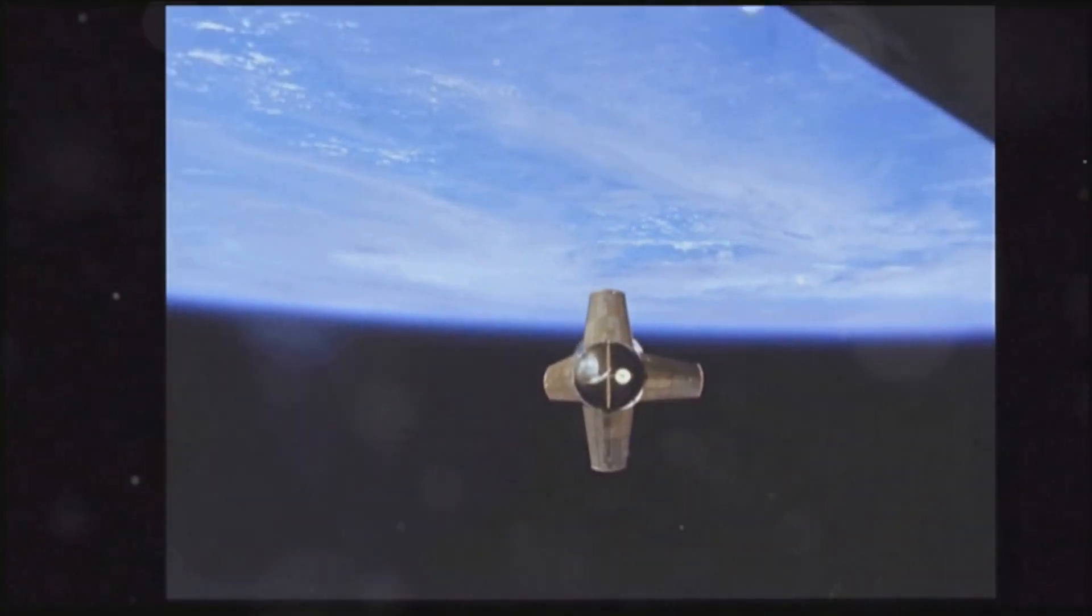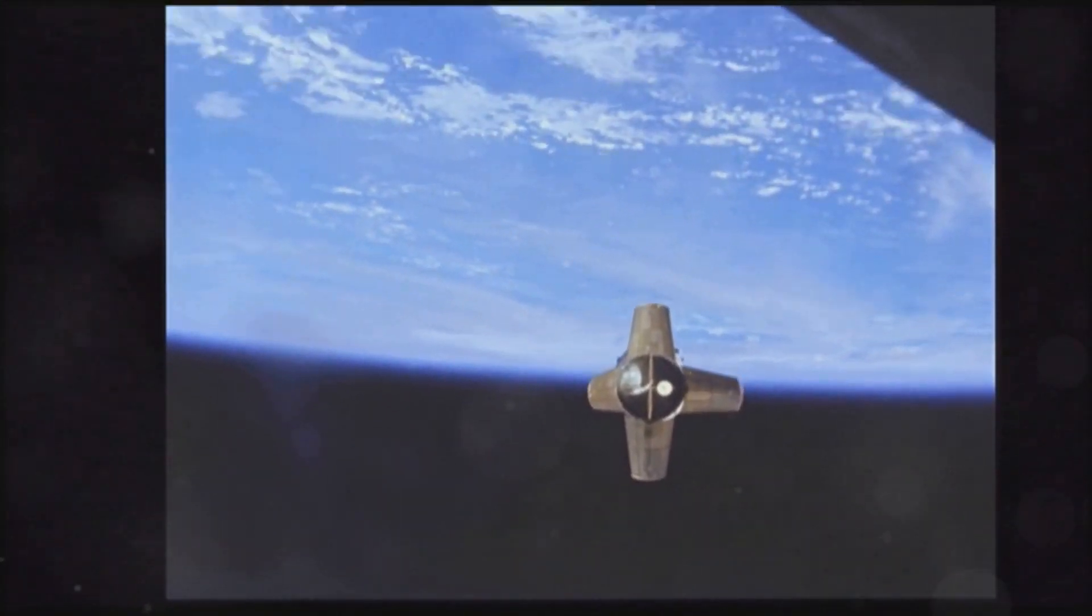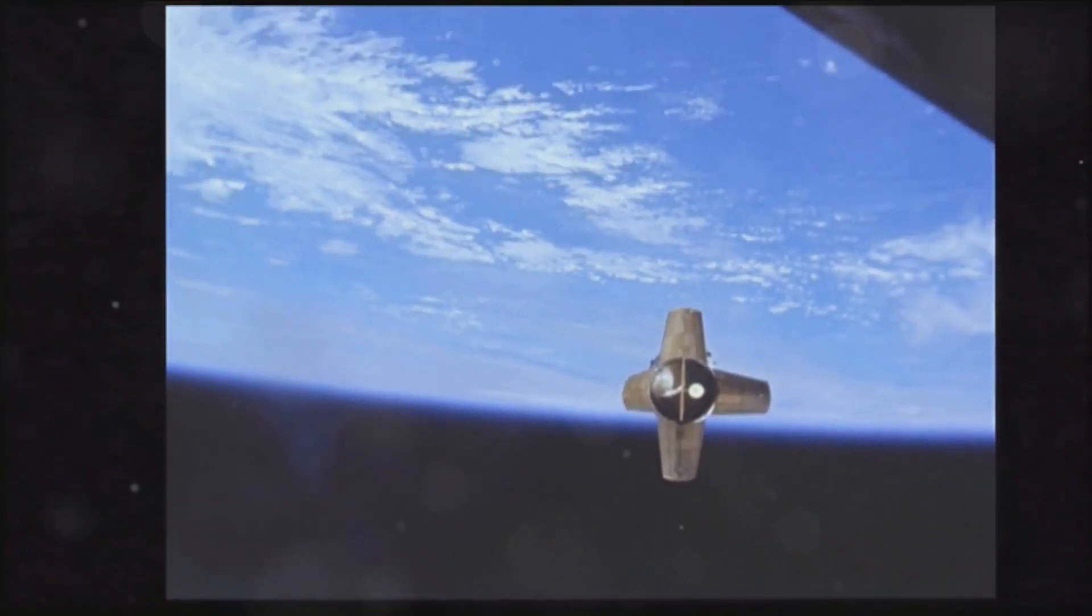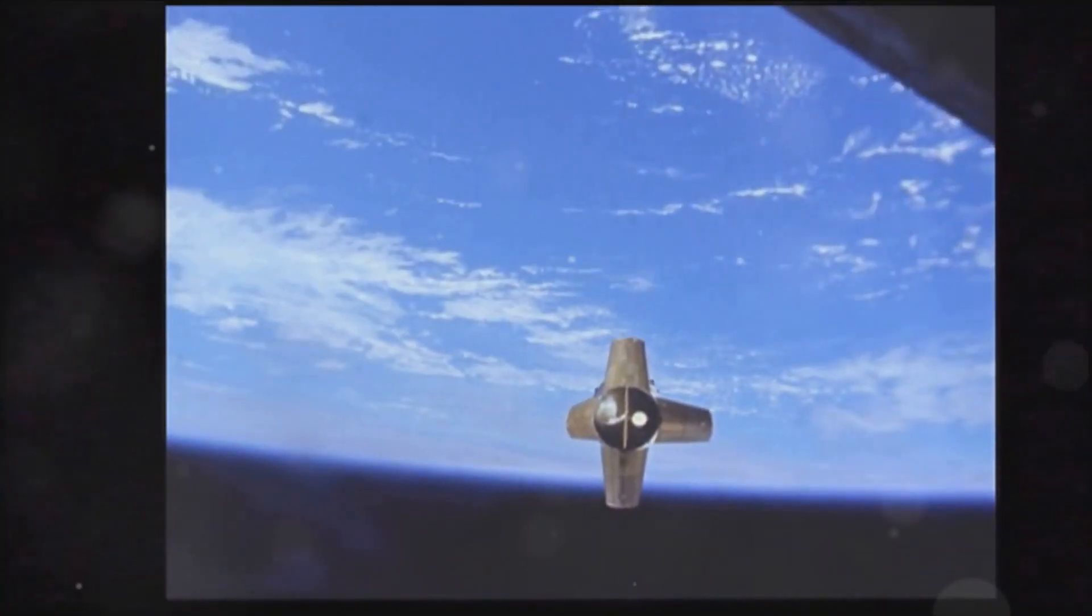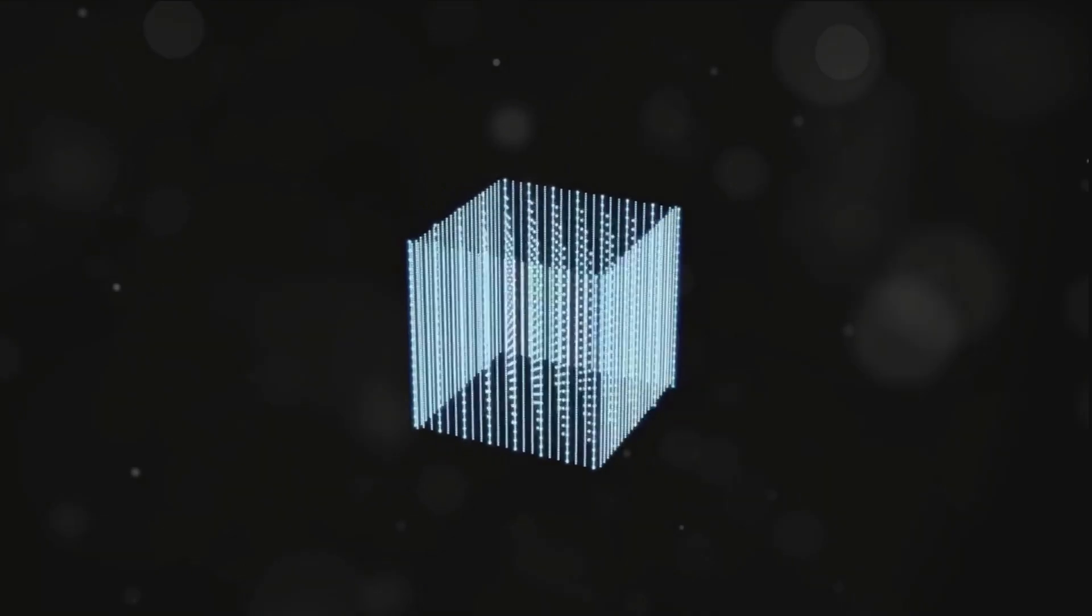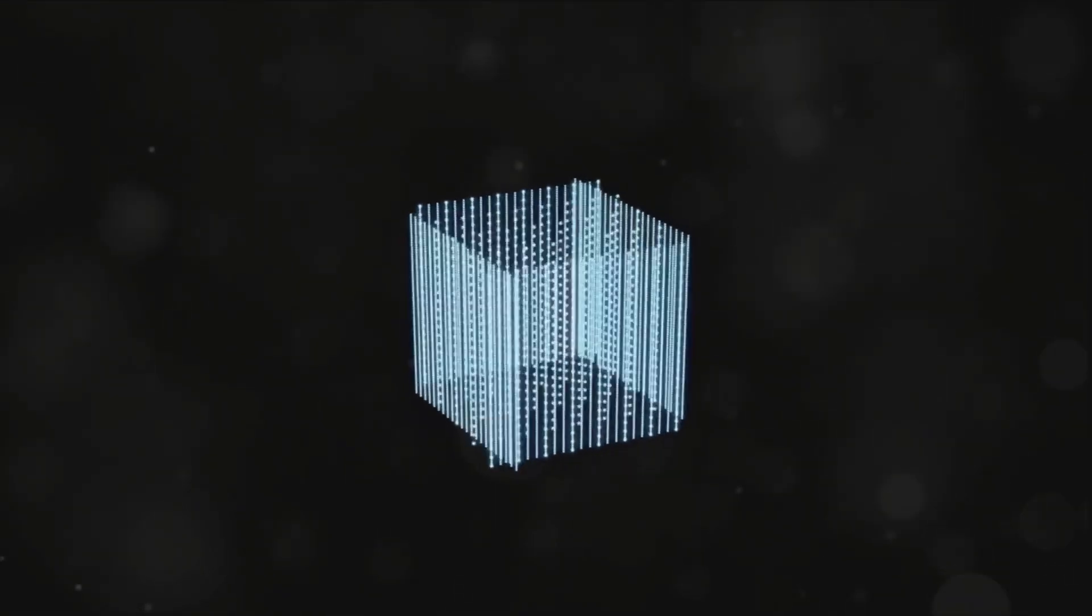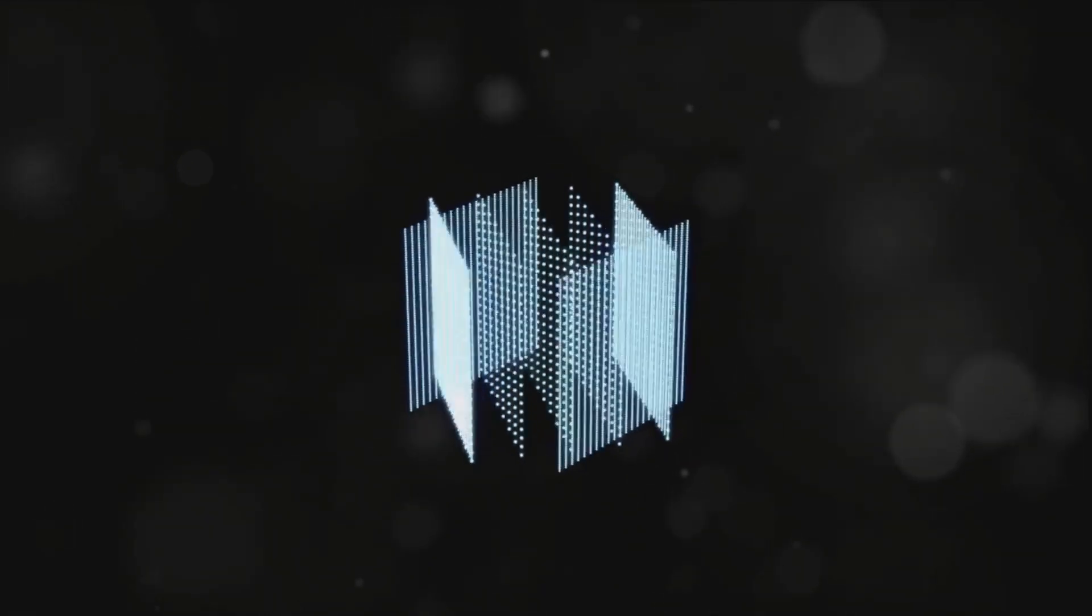Doubling again, we move into the third dimension. Eight points allow us to create a cube, a three-dimensional object that we can easily visualize. To leap into the fourth dimension, we double our points again, ending up with 16. This is where things start to get tricky. We can imagine the fourth dimension as a hypercube, a structure formed by connecting two cubes.